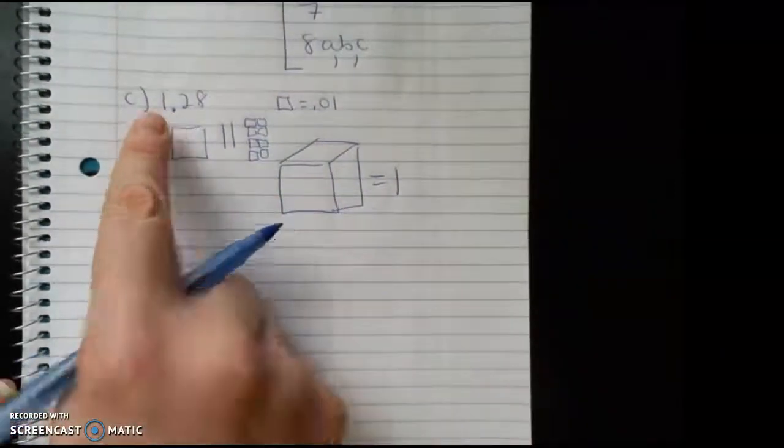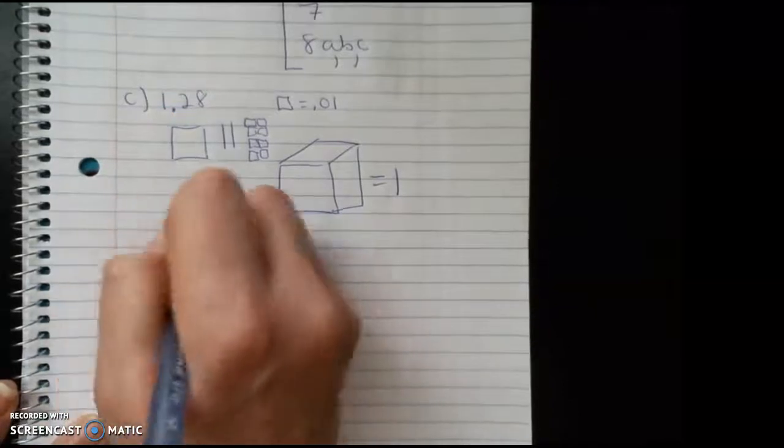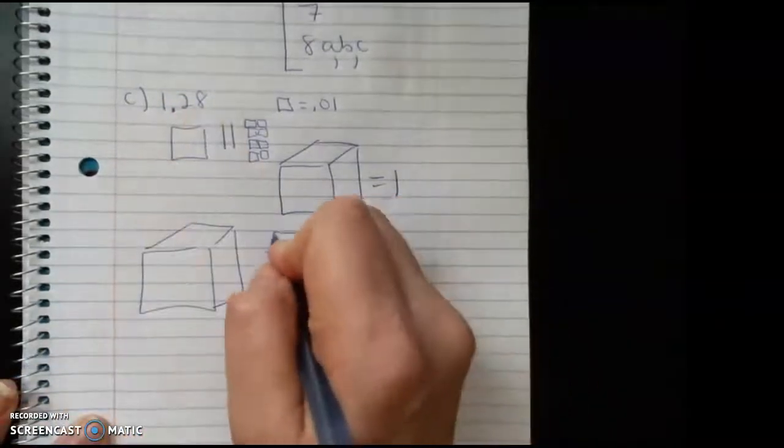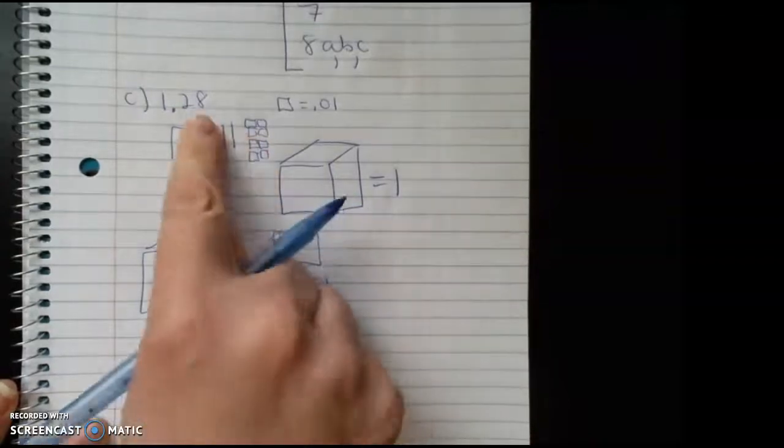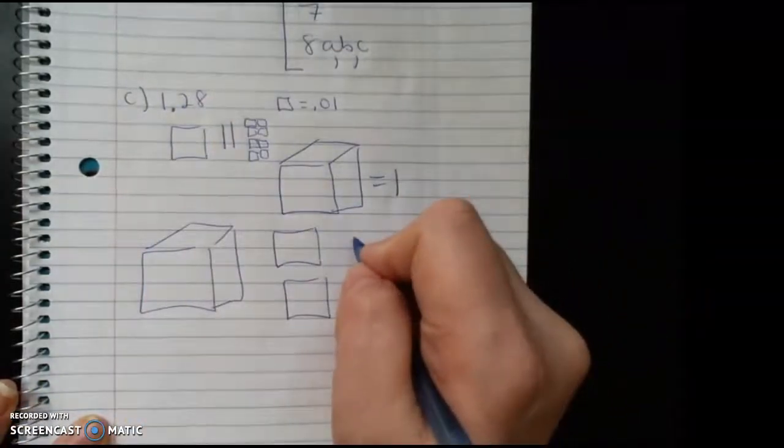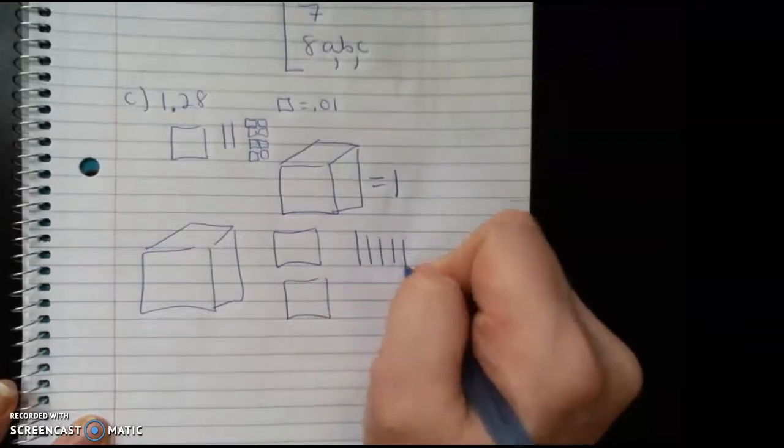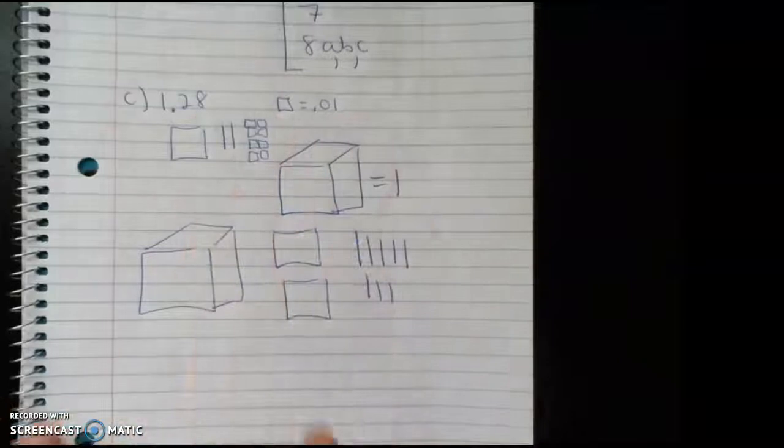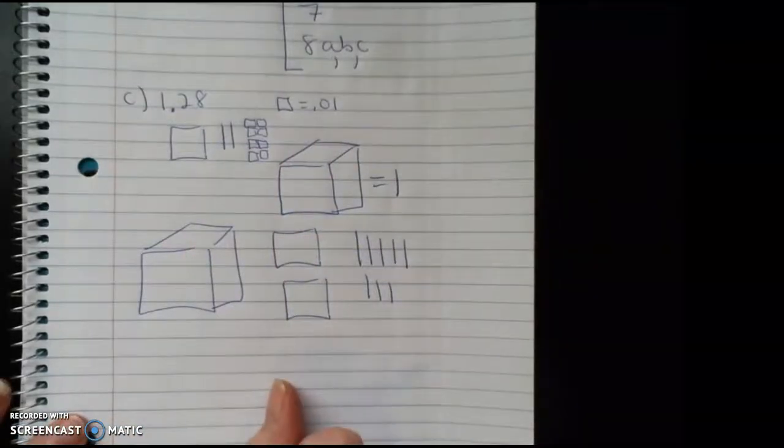Now you might have another option. You might be like, well, I want the big cube to always be worth my whole, no matter what. And that's fine. So I have one cube. That would be my whole. My tenths then would be flats. So I would have two flats. And then eight singles would be what longs?